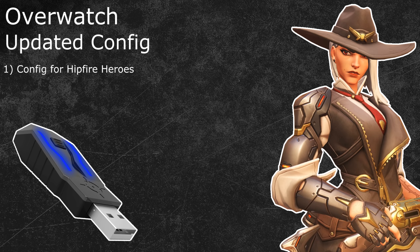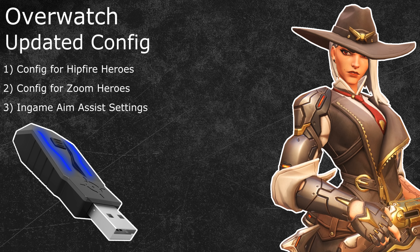In the second topic I will show you how to set up a Zim configuration for heroes that have a zoom or aim down sights ability. This is for characters such as Ana, Widowmaker or Ashe. In the last topic I will explain the best in-game aim assist settings, differentiating between hitscan and projectile heroes again.